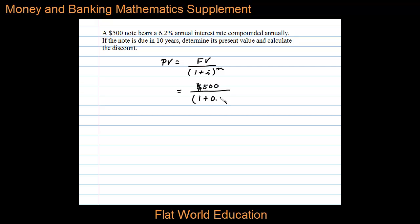which is 0.062, and we're going to raise that to the 10th power because there's 10 periods here. Now to simplify the calculation, we can write 500 divided by 1.062 raised to the 10th power.